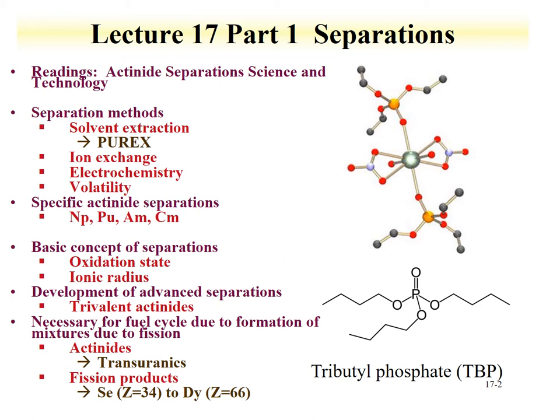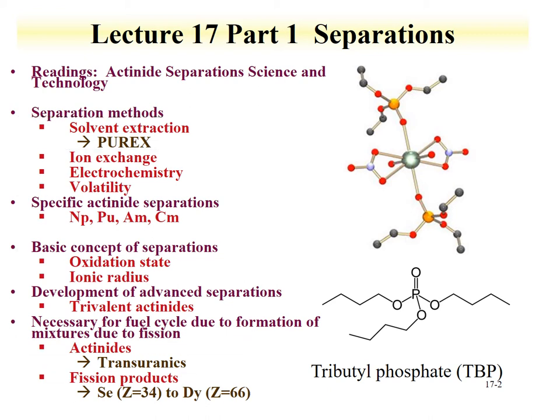Part one is going to focus on solvent extraction, and primarily the PUREX process — the plutonium-uranium extraction process. This is the workhorse of the nuclear industry, where plutonium and uranium are separated from the fission products, and they're separated from each other. We'll explore this in detail, because it is one of the more important separations involved for radionuclides.